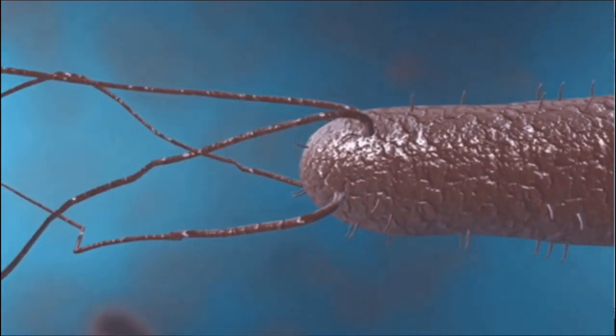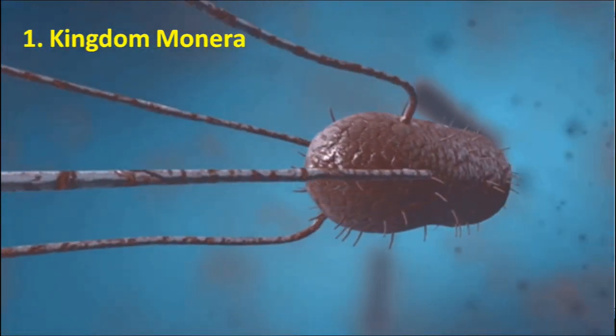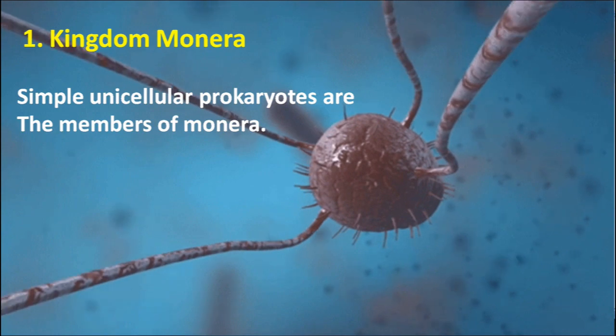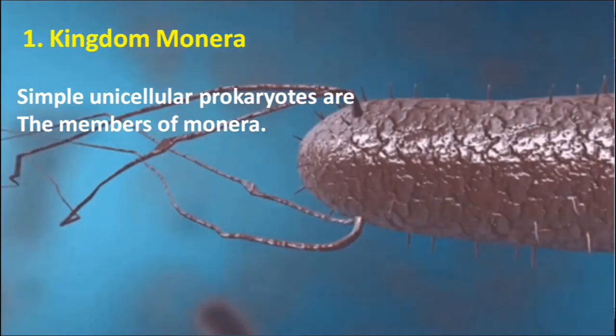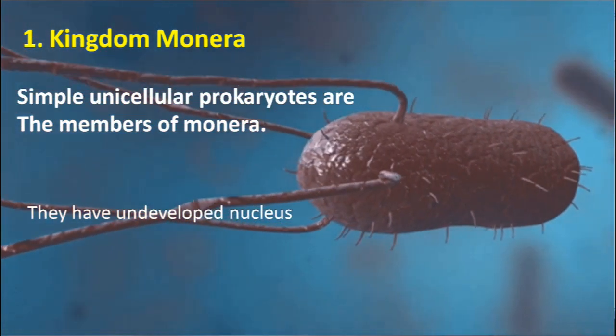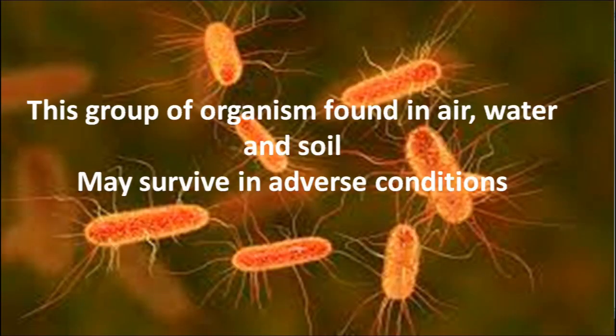The first kingdom is Monera. Simple unicellular prokaryotes are the members of Monera. They have an undeveloped nucleus. This group of organisms is found in air, water, and soil, and may survive in adverse conditions.